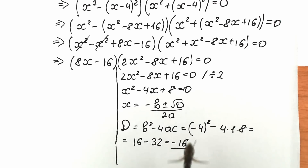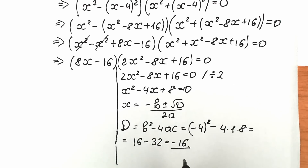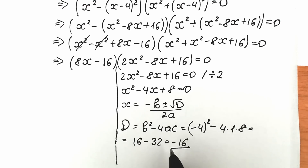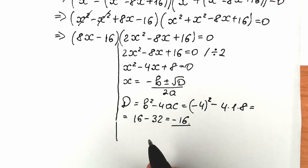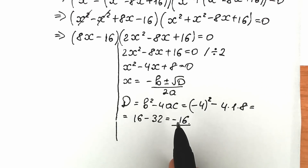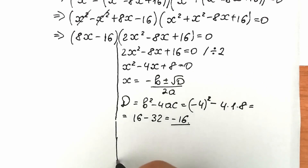A lot of students are confused about a negative discriminant, but it changes nothing for us — we have complex roots. This is a real root in the complex sense. So don't be confused: we have two complex roots, not real, but two complex.